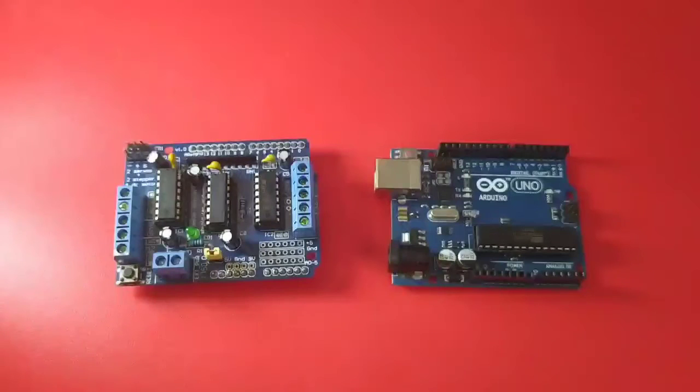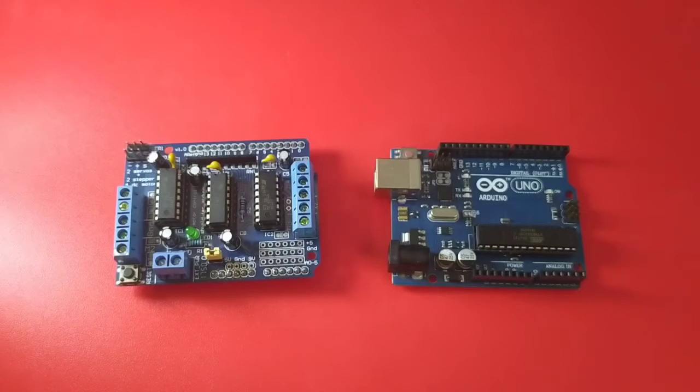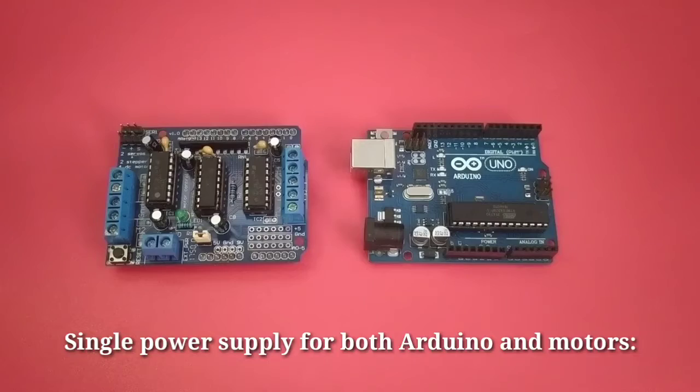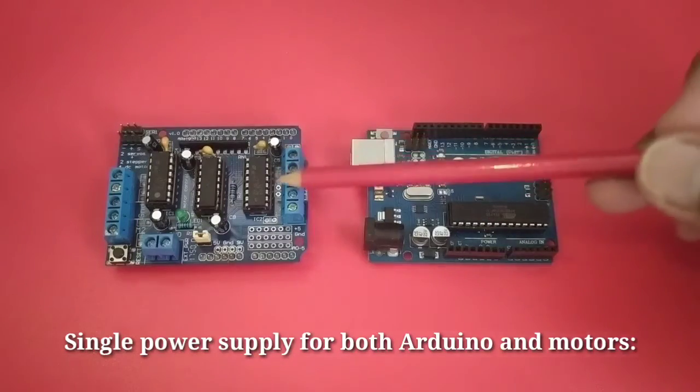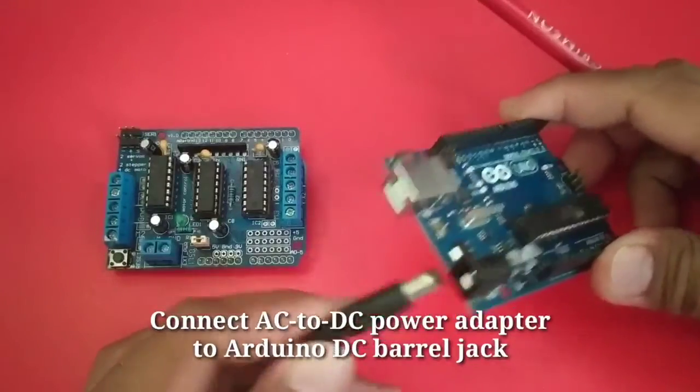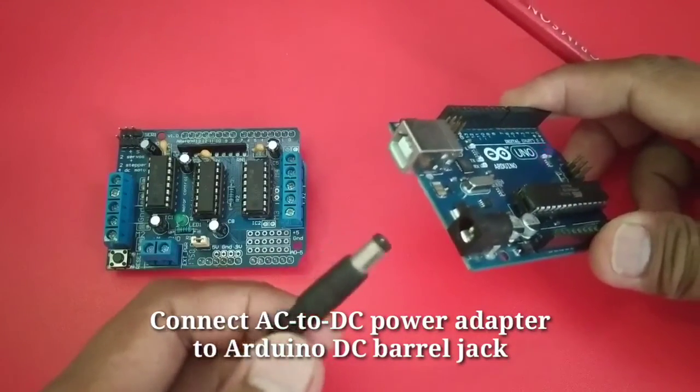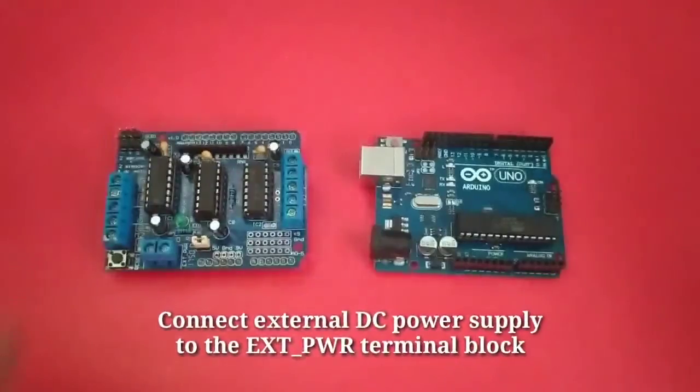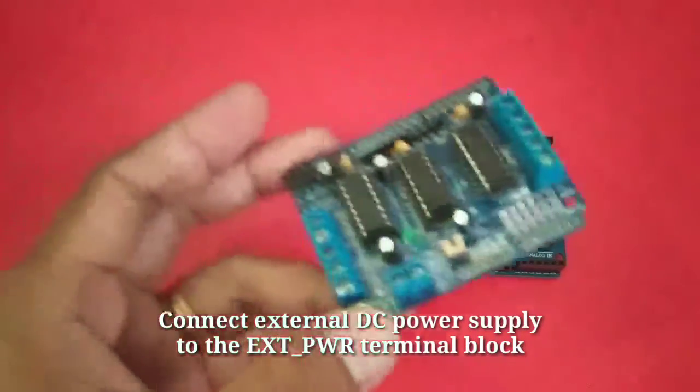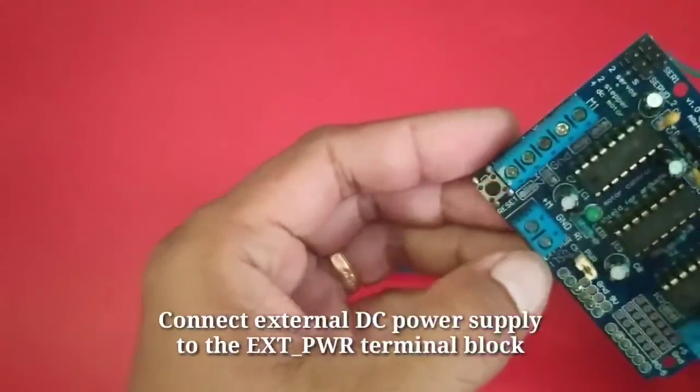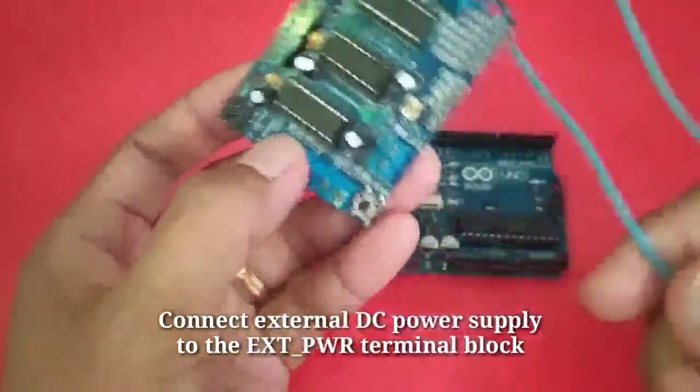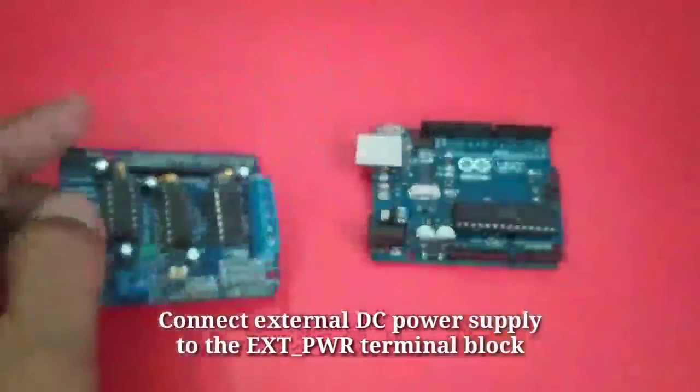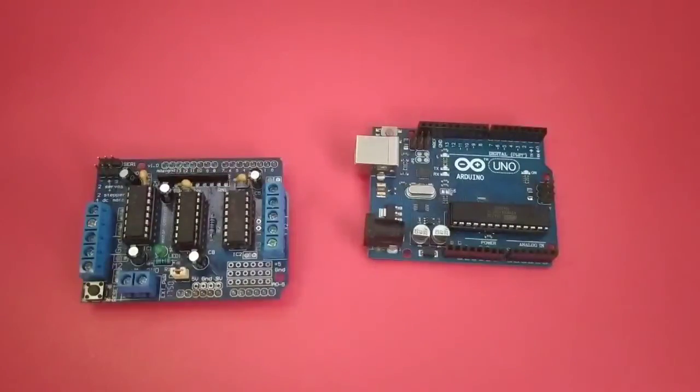You may ask, how we will power the motor driver shield and the Arduino? Our first option is a single power supply for both the Arduino and the motor driver shield. We can connect an AC to DC adapter to the barrel jack of the Arduino, like this. Or, we can connect an external power supply through this EXT power terminal block, like this, if this is a power supply, here.